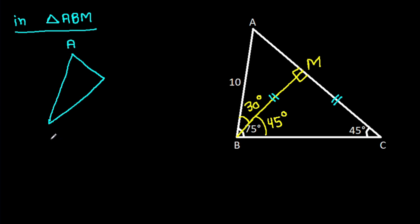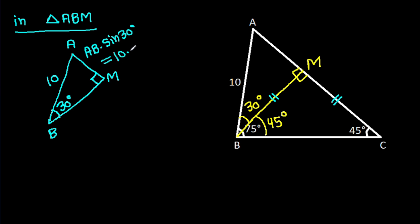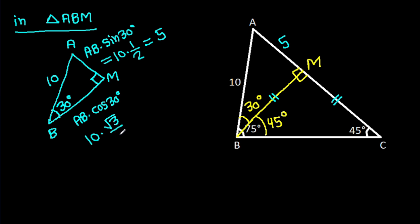In triangle ABM, this angle is 90 degrees, this angle is 30 degrees, and AB is 10. So AM will be AB times sin 30 degrees, that will be 10 times 1 over 2, and it is 5. And BM will be AB times cos 30 degrees, that is 10 times root 3 over 2, that will be 5 root 3.